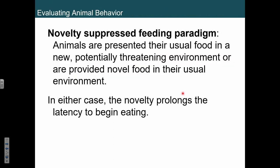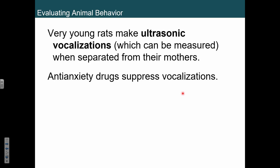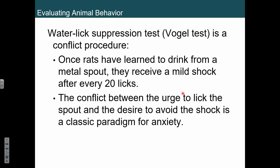Another way to measure anxiety is ultrasonic vocalizations. There are also water lick tests — what if every 20 times you got a drink from the water fountain, you got shocked? You train the animal, and then if you're testing an analgesic, you give a small shock and they may not feel it, so they won't try to turn it off. We'd have to put up a sign: don't use this if you might be pregnant.